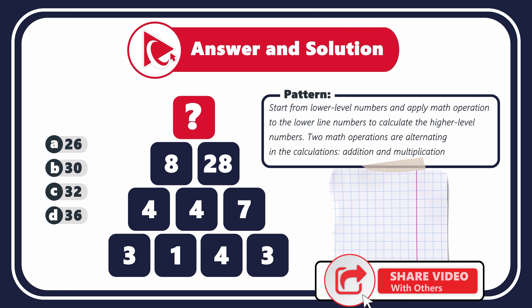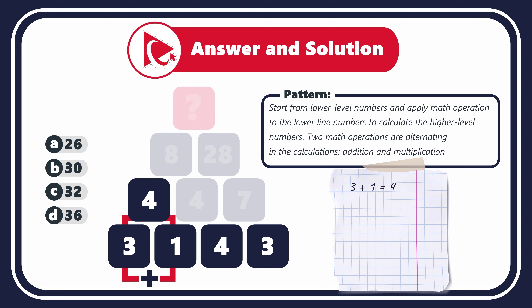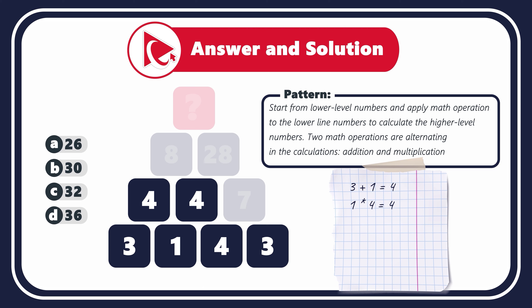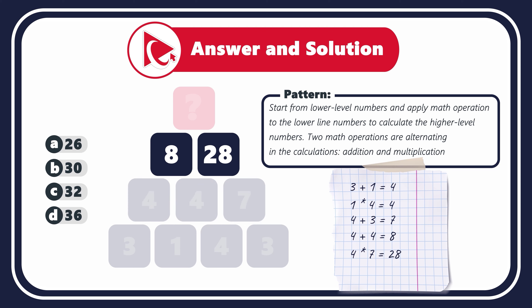Let's look at the example. Looking at the numbers in the bottom left corner: 3 plus 1 equals 4. But 1 multiplied by 4 equals 4. Remember, addition and multiplication are alternating, so the next one would be addition again: 4 plus 3 equals 7. Going to row 2: 4 plus 4 equals 8, and 4 multiplied by 7 equals 28. So to calculate the top number, we need to add 8 and 28 to get the final result of 36.